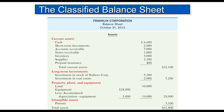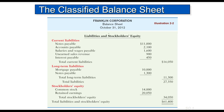On the other side, we have the current liabilities — these are liabilities that will be paid within the next accounting period: notes payable, accounts payable, salaries and wages payable, unearned sales revenue, and interest payable. They are listed most likely in terms of how quickly we're going to have to pay them, or here in the order of magnitude, though that's not always how you see it.